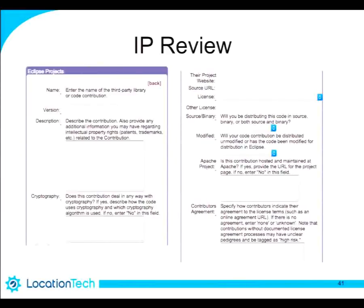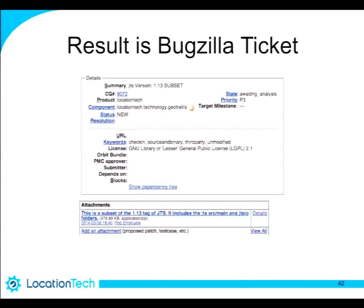Some IP reviews take a very long time. The worst case was code in GeoTools that came from a newsgroup post — raising the question of what the open source license of a newsgroup post actually is. The result of each review is a Bugzilla ticket, so although the IP team is very formal, you communicate with them like a developer using bug tickets.